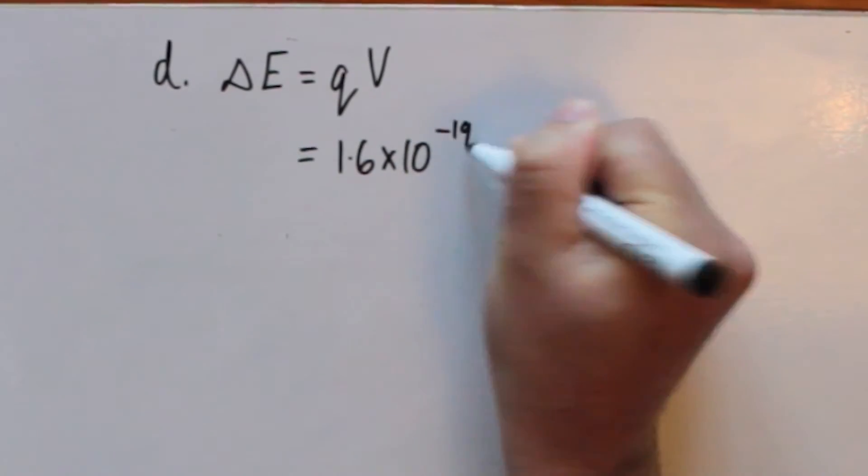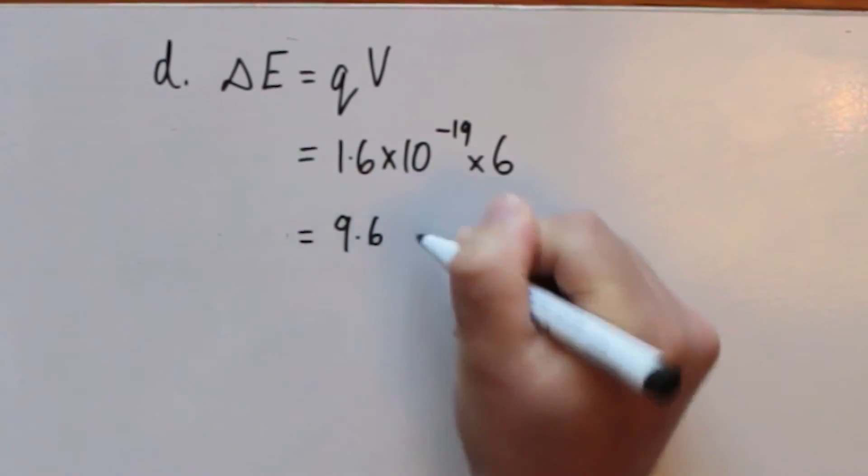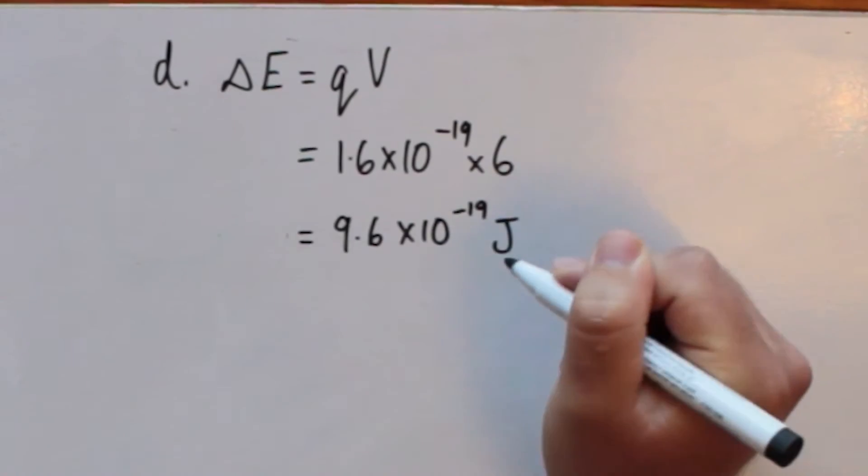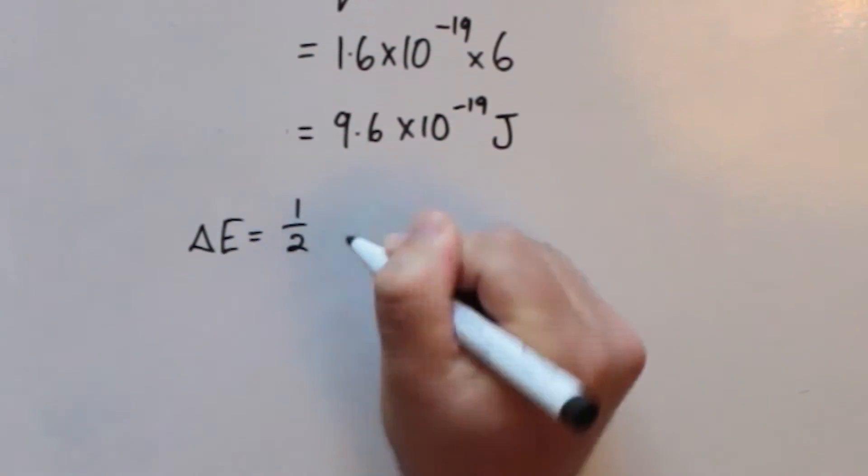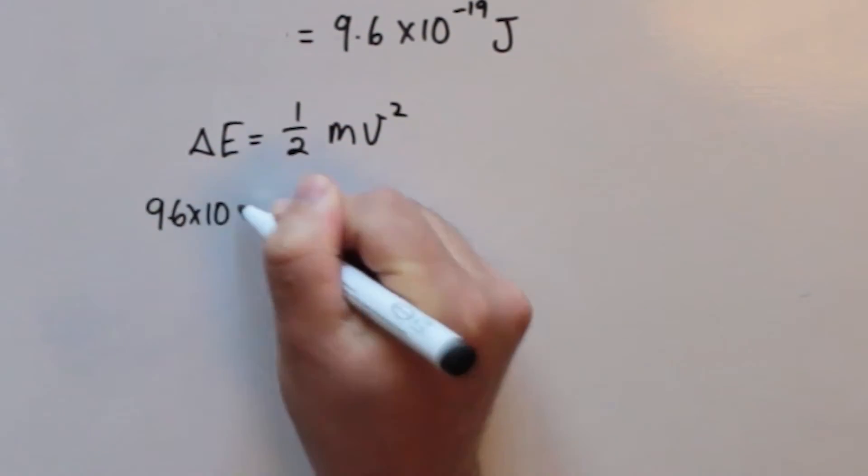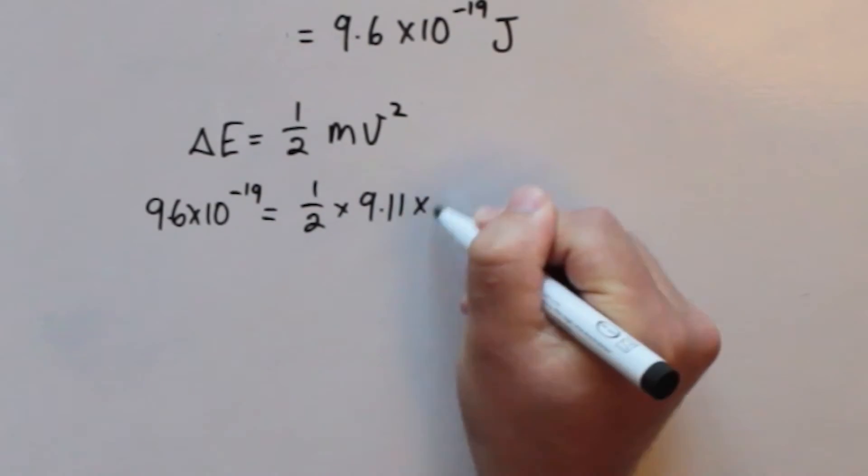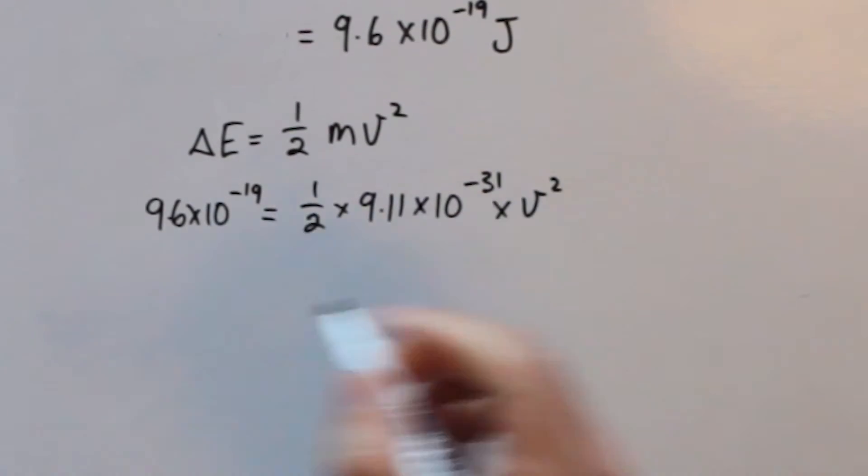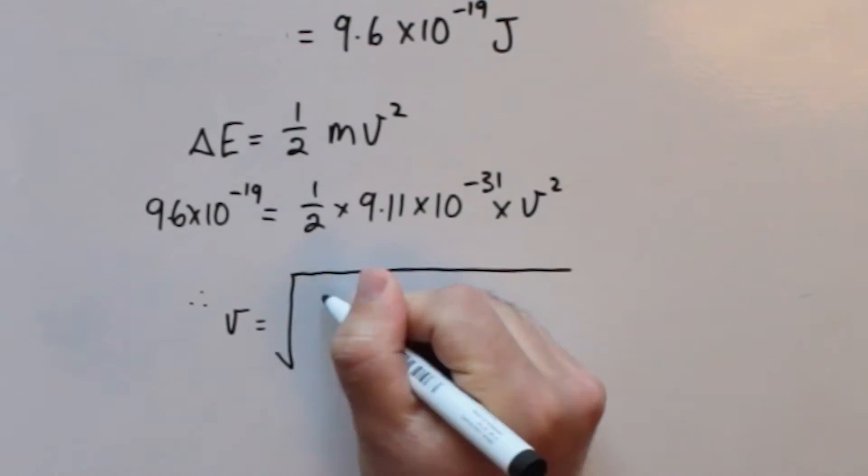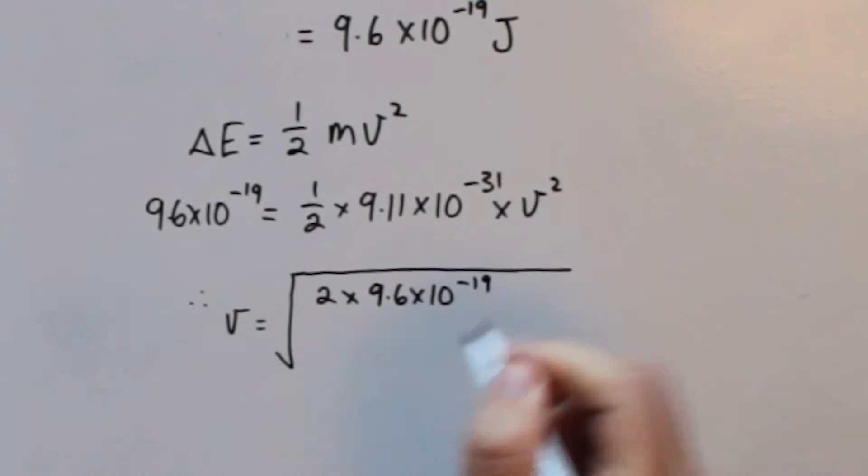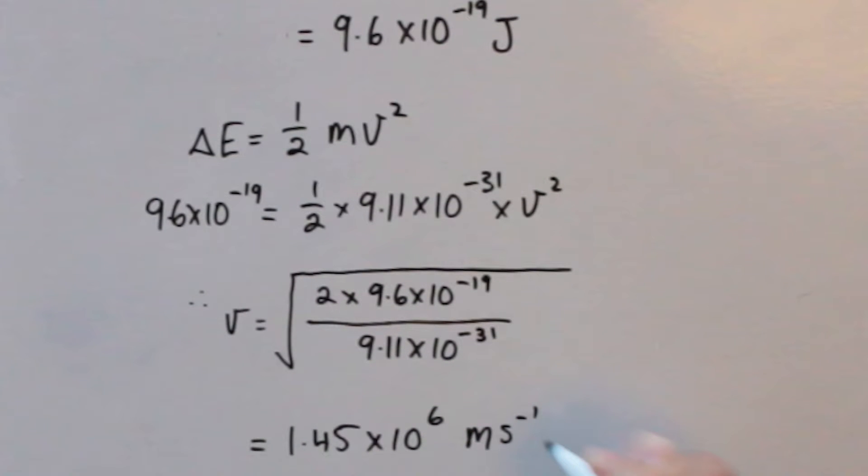So 1.6 times 10 to the negative 19 multiplied by the 6 volts is 9.6 times 10 to the negative 19 joules. Then equating that to 1.5 mv squared, where the mass of the electron is 9.11 times 10 to the negative 31 kilograms. Solving for the speed gives 1.45 times 10 to the 6 metres per second.